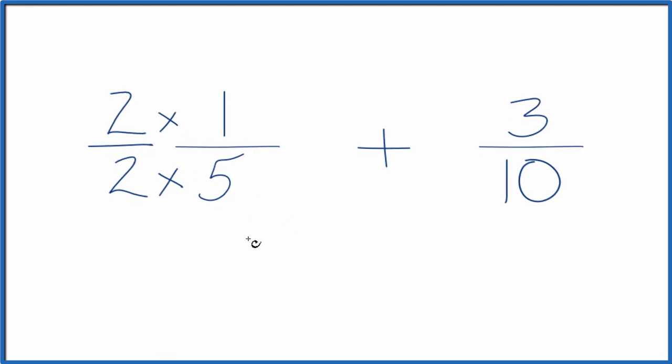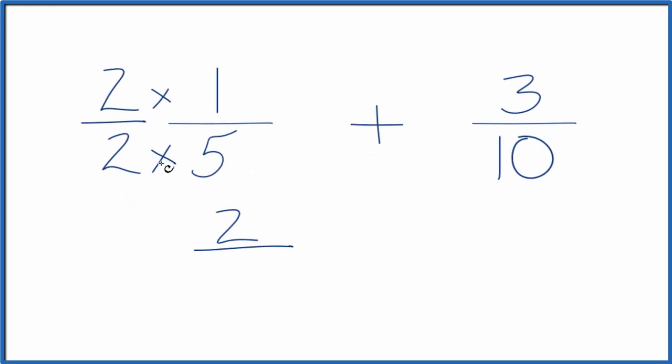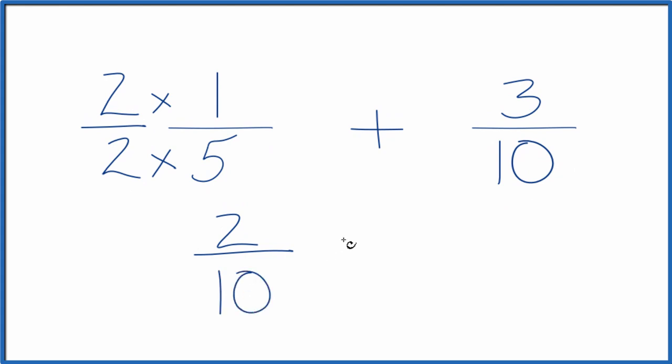Because now we have two times one, that's two. Two times five is ten. And over here, we have ten in the denominator, so we'll just put this as three-tenths.